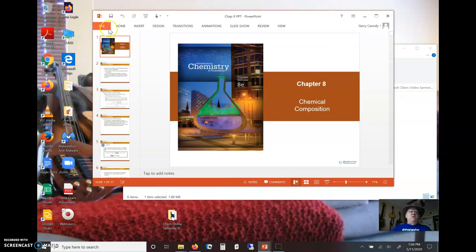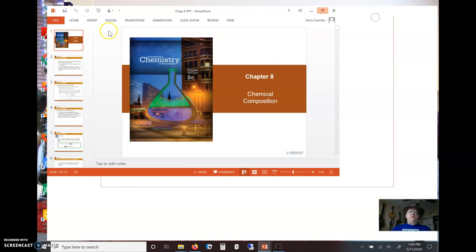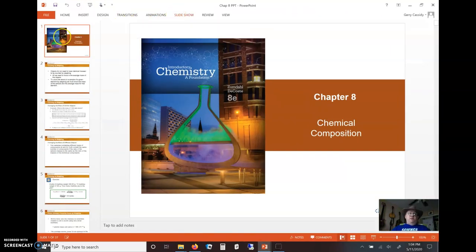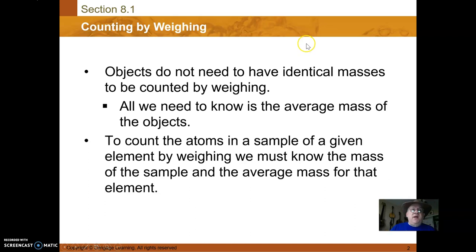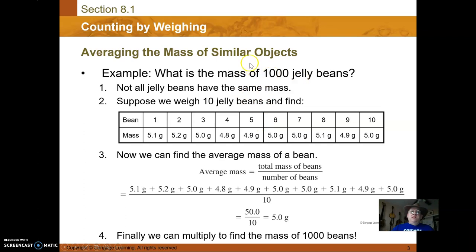Chemical composition. Objects don't need to have identical masses to be counted by weighing. This is when we started doing all the averaging. We need to know the average mass of objects - like the average mass of a hundred jelly beans. This whole page is really convoluted. I would probably dump this page if I taught chemistry again because it's complicated.